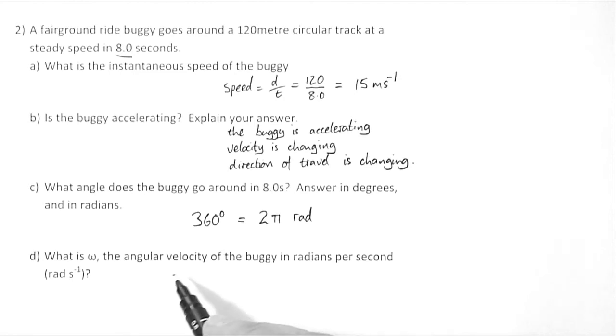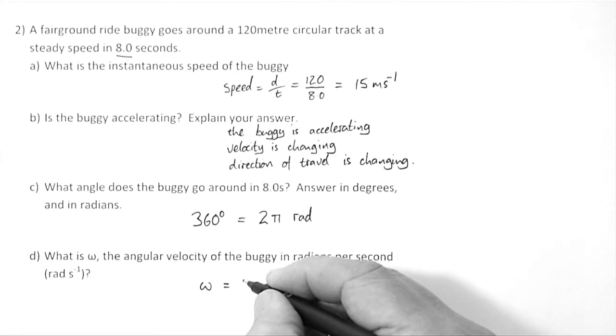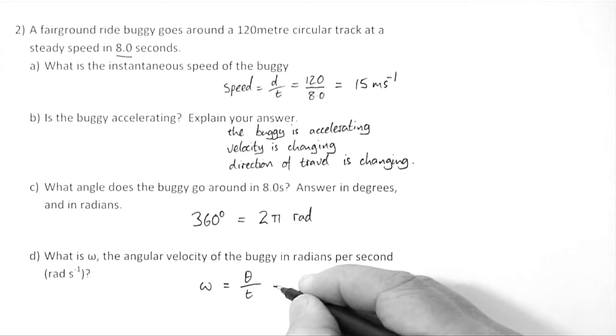What is omega, the angular velocity of the buggy, in radians per second? Well, omega is equal to the angle moved through divided by the time taken. If we take one complete revolution,